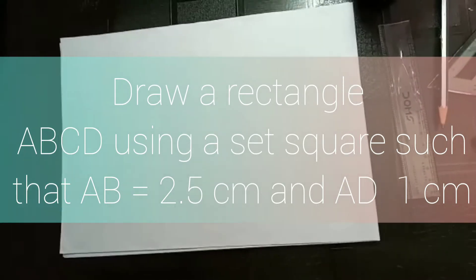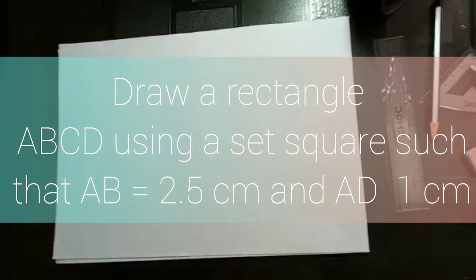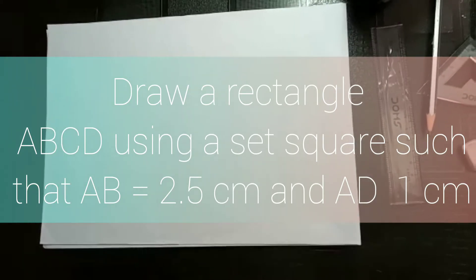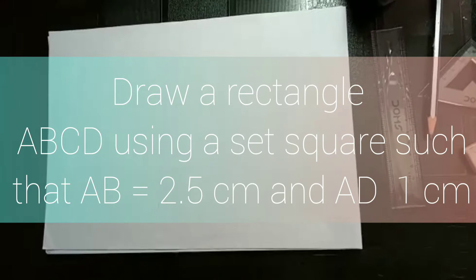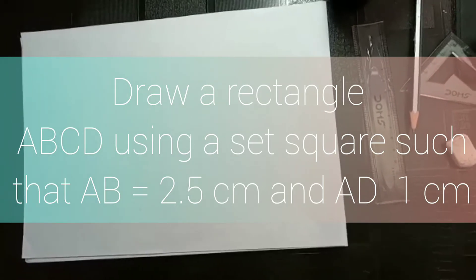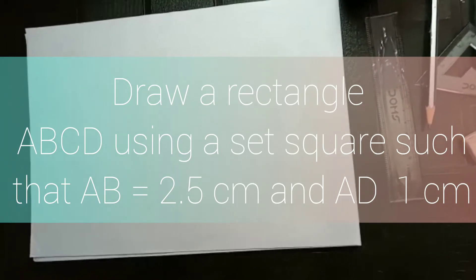So the question is, draw a rectangle ABCD using a set square such that AB is equal to 2.5 cm and AD is equal to 1 cm.